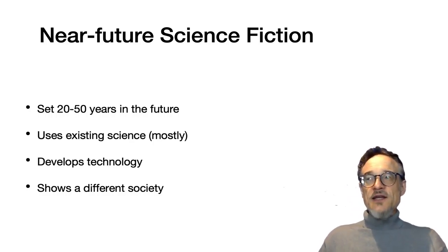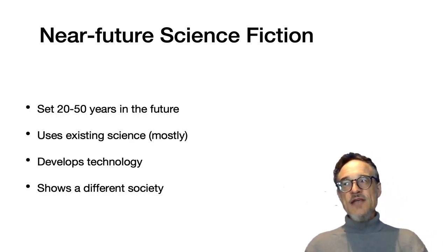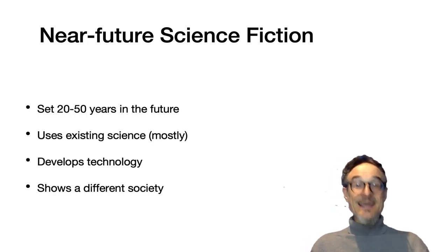Often as well, science fiction looks at a different kind of society. So taking the world that we have now and looking at all the possible directions we could go in, and the different kinds of society that we can have, these movies look at that and look at what we could be and how we could run our world.